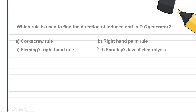Which rule is used to find the direction of induced EMF from a DC generator? That's right — if you are learning the shortcut: the right-hand rule is the correct answer for DC generators.